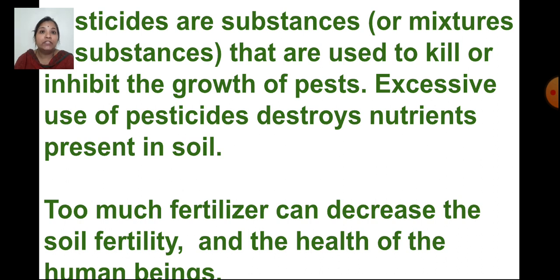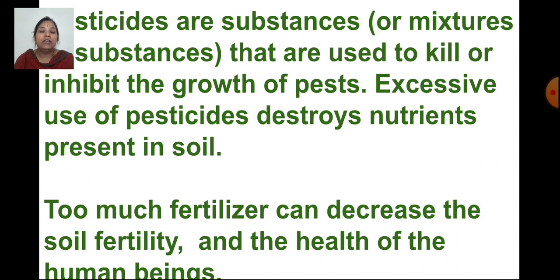When we consume vegetables and fruits sprayed with too many pesticides, or grown with excessive fertilizers, it is not good for our health. That is why people are moving towards organic farming, where manure is used instead of chemical fertilizers and pesticides. In this way, soil is getting polluted because of agricultural practices like using pesticides and fertilizers.